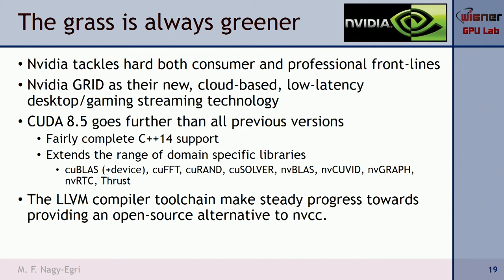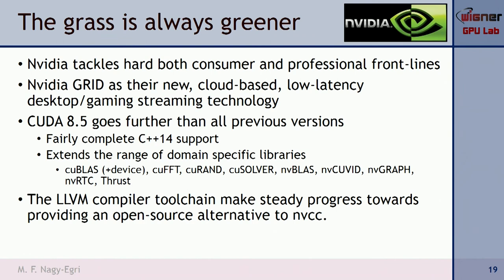The range of NVIDIA's domain-specific libraries is still not exhaustive — though this list is not complete, it includes: basic linear algebra (cuBLAS), FFT (cuFFT), random number generation, PDE and ODE solvers, NVBlast as a drop-in replacement for PhysX destruction libraries, video decoding and encoding, NVGraph for graph analysis, and Thrust — the parallel STL of NVIDIA. The LLVM compiler toolchain is also making steady progress to provide an open-source alternative.